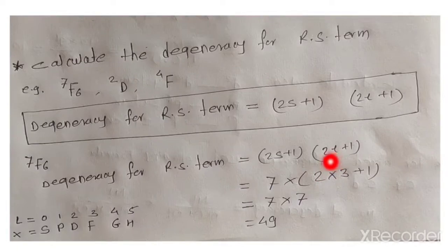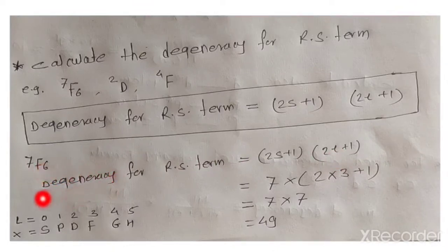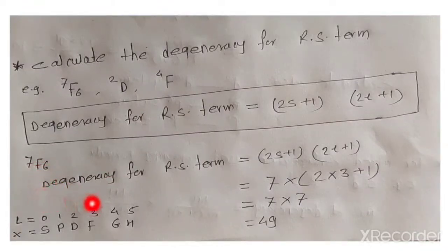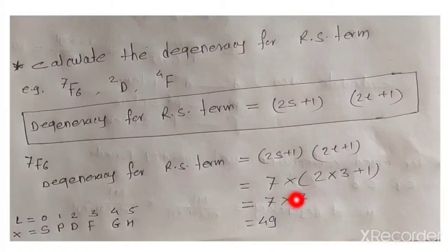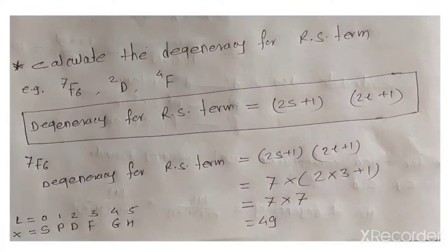Now we need to find the value of L. For the F term, L corresponds to the letter: S=0, P=1, D=2, F=3, G=4. So F means L equals 3. Putting the values: 2L+1 equals 2 times 3 plus 1, which equals 7. Therefore degeneracy equals 7 times 7, which is 49. In this way we calculate the degeneracy for the RS term.